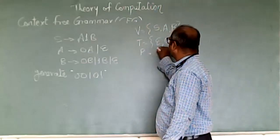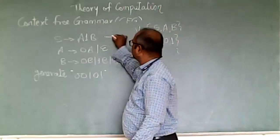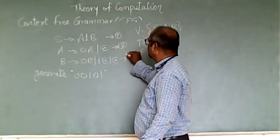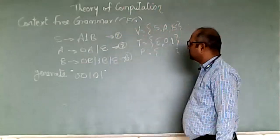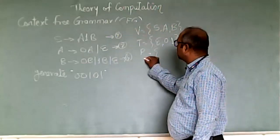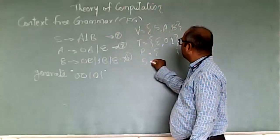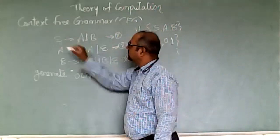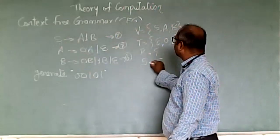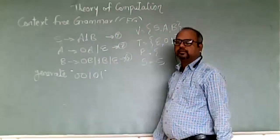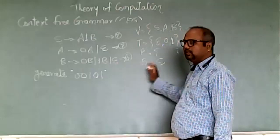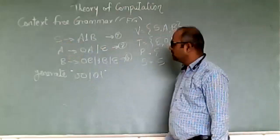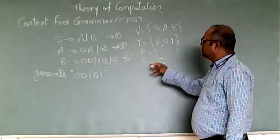Now P is a production. This is production number one, production number two, production number three — three productions. And the last component: what is your starting symbol? The starting symbol is S. So S is the starting symbol and also a variable. We can use other variables here as well.